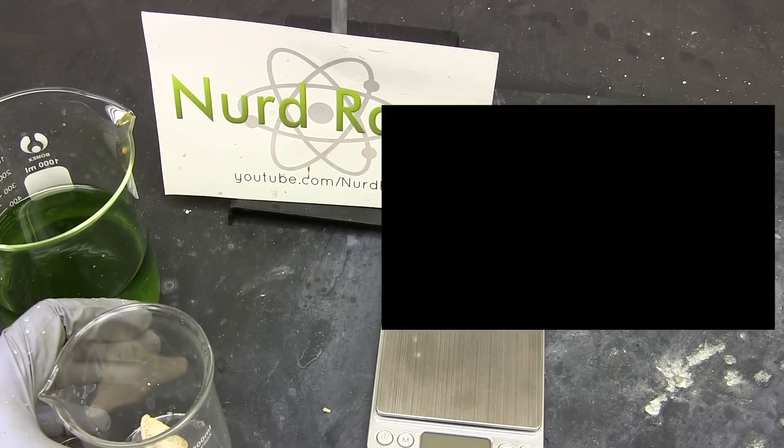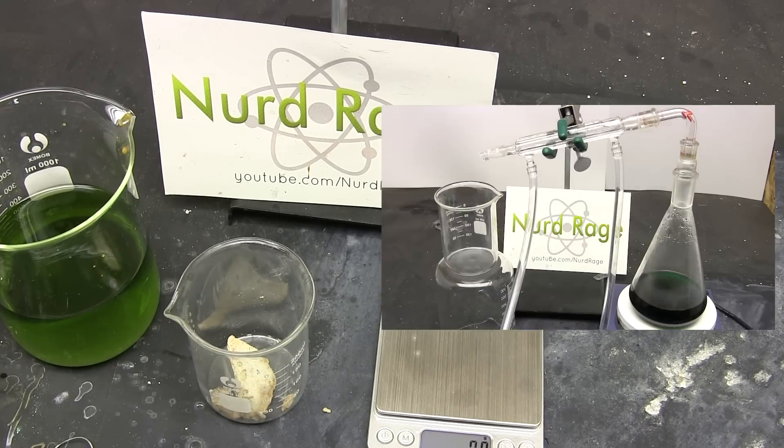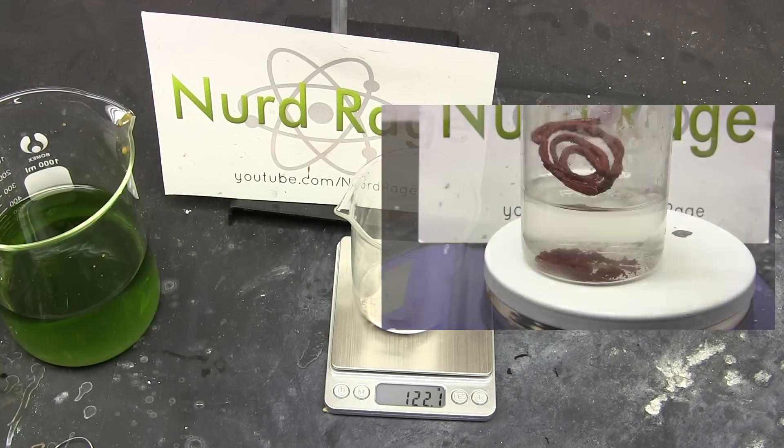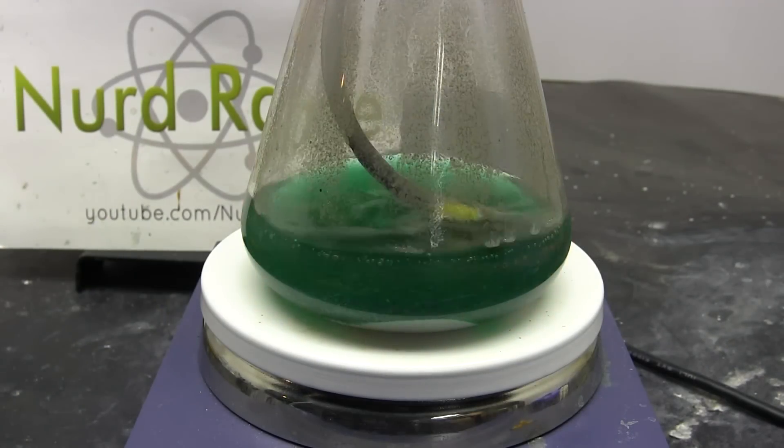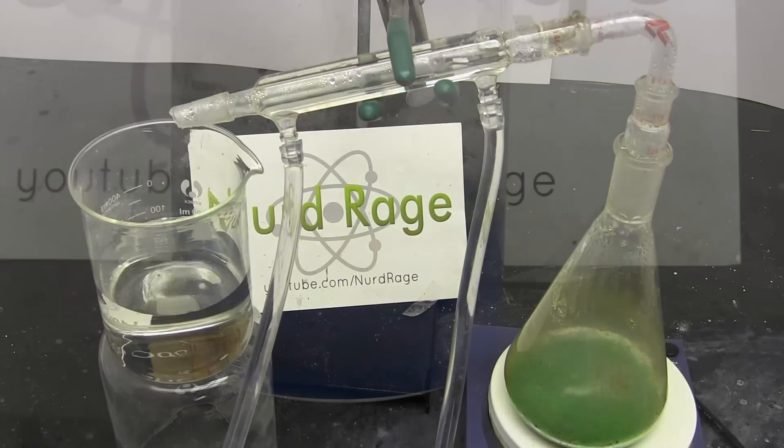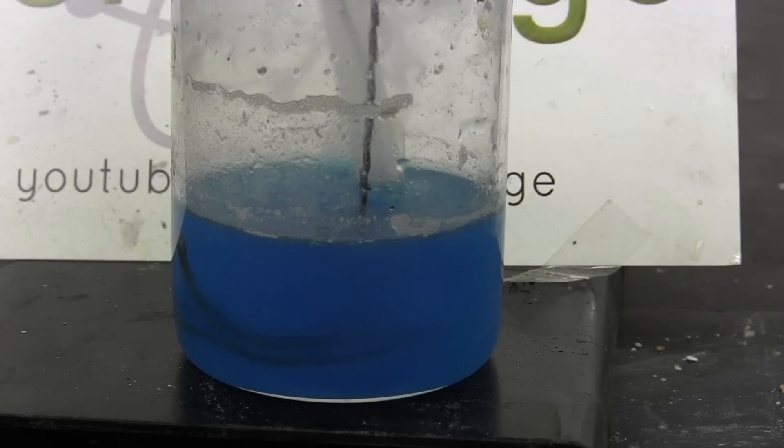Now it just so happens I already have a video that goes into the process in full detail. So I won't waste your time here. You can go right to the weighing part and proceed to convert the copper chloride to copper sulfate, distill up the hydrochloric acid and electrolyze the copper sulfate to recover the copper. The process is no different.